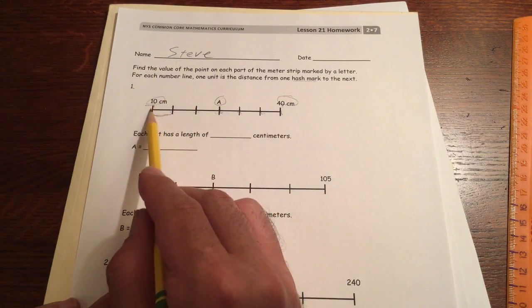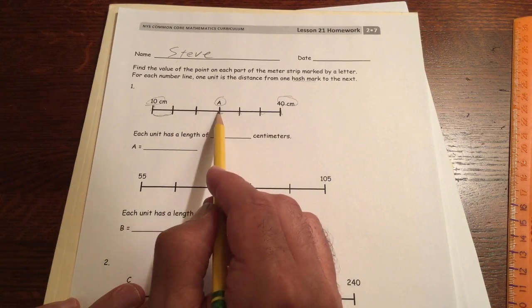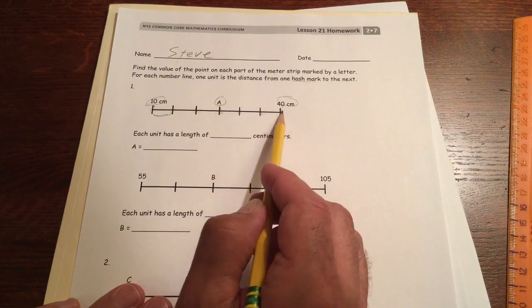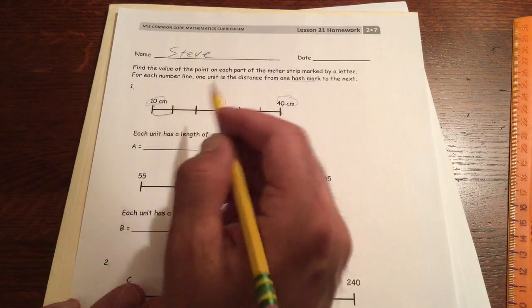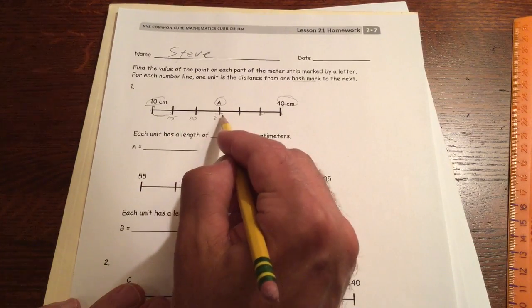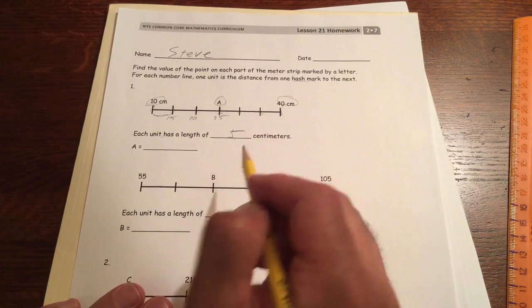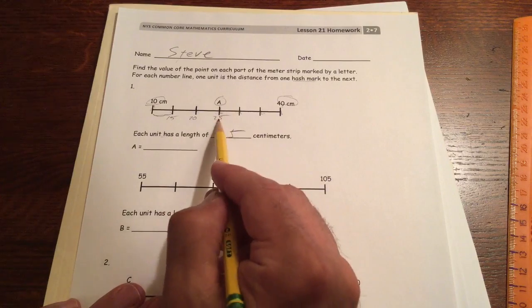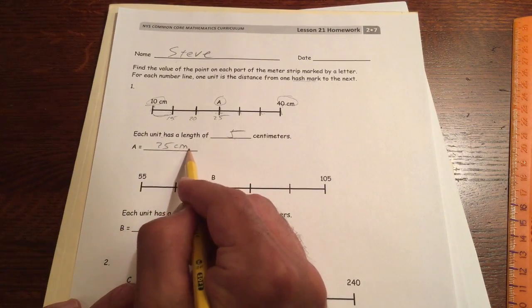Let's see. 10, 15, 20, 25, 30, 35, 40, so fives work. Fives work, so this would be 15, 20, 25. Each unit has a length of 5 centimeters and A is 25 centimeters.